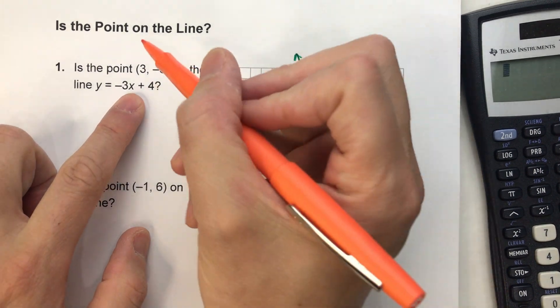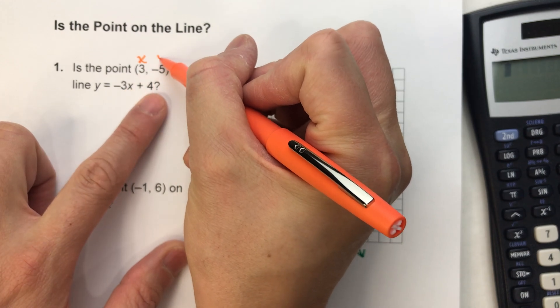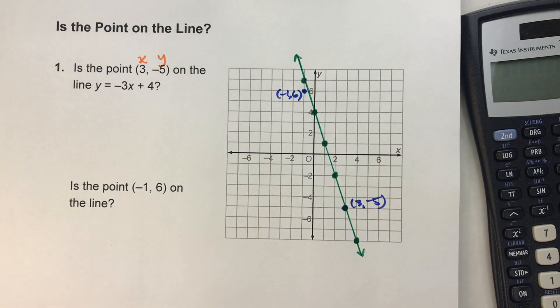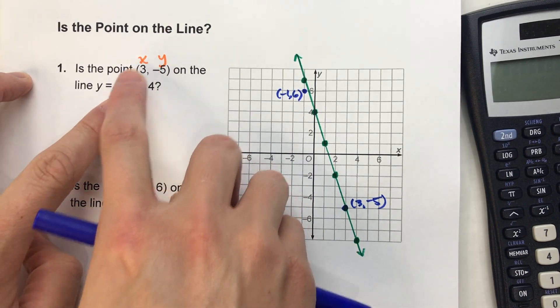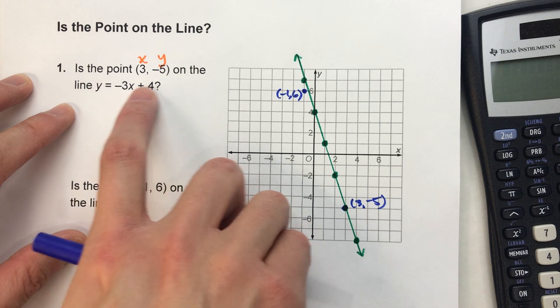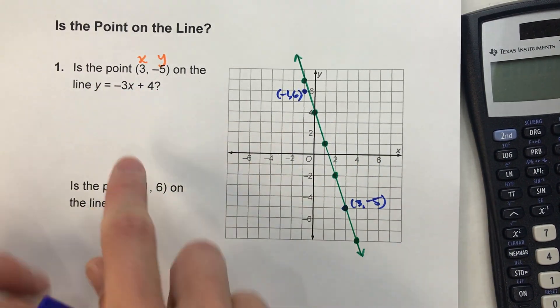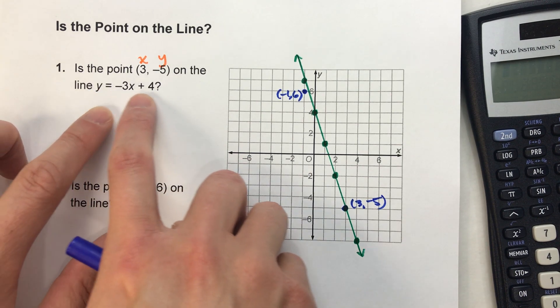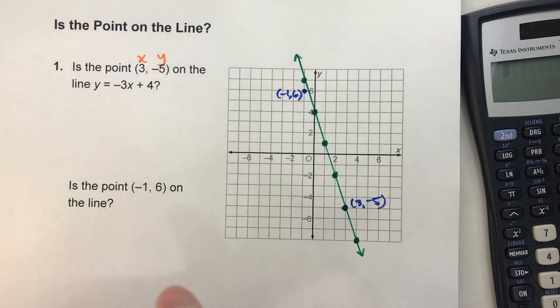So, we'll start with this first one, this point (3, -5). Remember, this is my x-coordinate and this is my y-coordinate of that point. So what I'm going to do is I'm going to put the 3 in for x into my equation, I'm going to put -5 in for y into my equation, and see if it works. In other words, see if this side, the left side of the equal sign, actually does equal the right side of the equal sign. So let's do that.